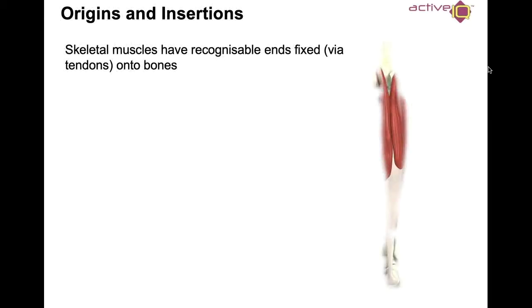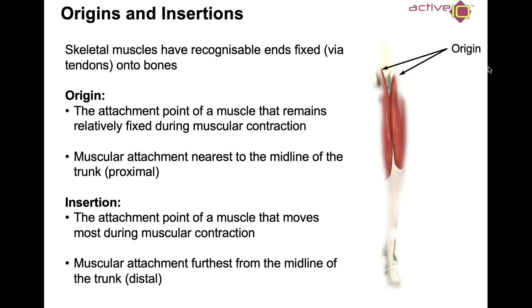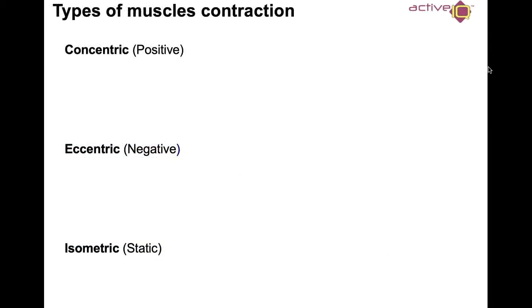Looking at origins and insertions: skeletal muscles have recognizable ends fixed via tendons onto bones. The origin is the attachment point of a muscle that remains relatively fixed during muscle contraction — the muscular attachment nearest to the midline of the trunk, the proximal end. The insertion is the attachment point that moves during muscle contraction — the muscular attachment furthest from the midline of the trunk, the distal end. For selected muscles, you should be able to name the joints crossed and locate the origins and insertions.